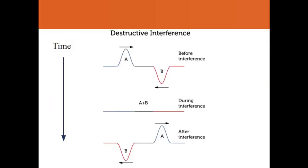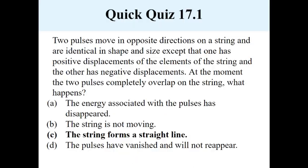Here again is a step-by-step description of the interference. You have two pulses out of phase. During interference they flatten each other out, and then they keep passing by. So the answer is C.